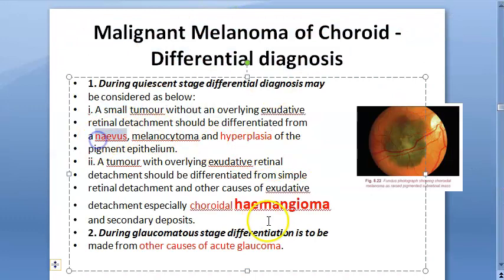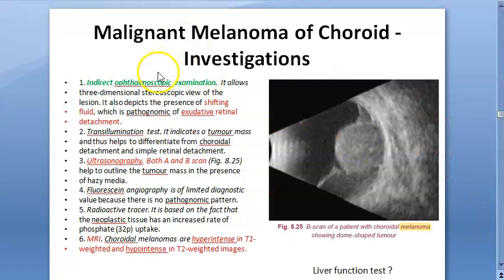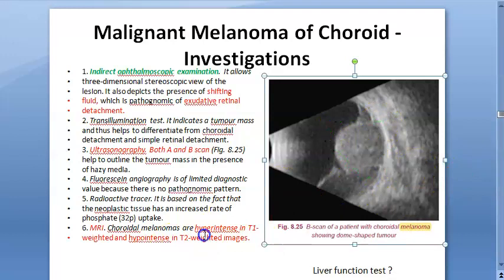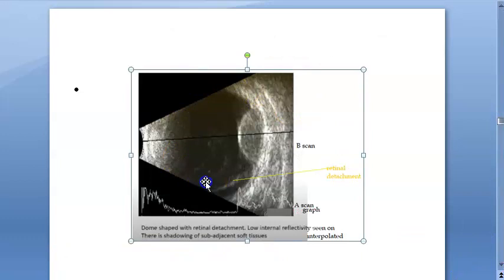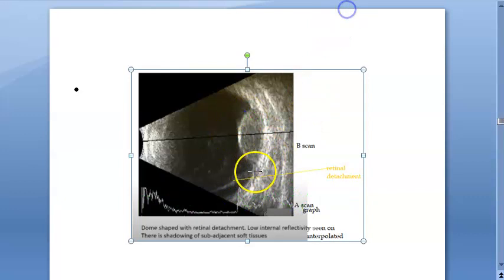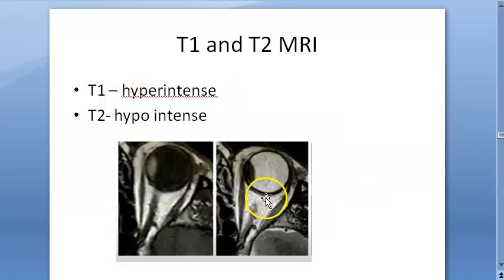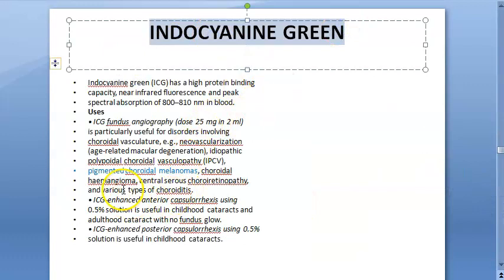Differential diagnoses include nevus and choroidal hemangioma. For investigations: indirect ophthalmoscopy is done to view the fundus; A-scan and B-scan ultrasound show a dome-shaped mass; MRI shows hyperintense T1 and hypointense T2 signal; liver function tests are done to assess metastasis; color Doppler shows vascularity; gadolinium imaging and indocyanine green fundus angiography can also be performed.